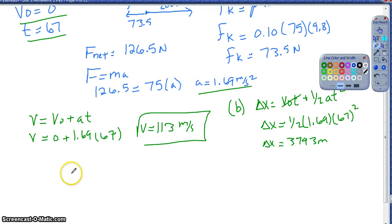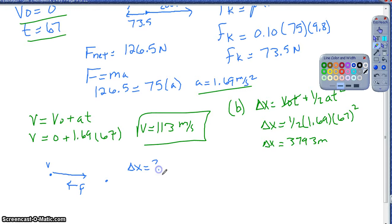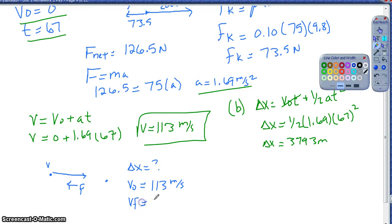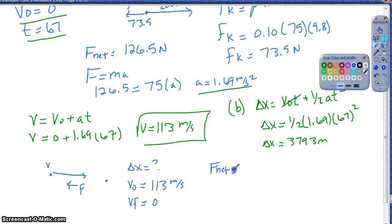I also need to figure out how far he goes while slowing down. Once he reaches top velocity he runs out of fuel, and friction works against him until he comes to rest. I reset: my initial velocity for this period is 113 meters per second, final velocity is 0. Once coasting, the thrust is gone, so the net force comes strictly from the frictional force of 73.5 newtons.